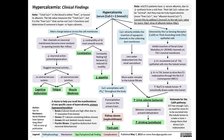Hypercalcemia causes decreased GI motility, leading to constipation and reduced appetite. At the same time, calcium directly inhibits aquaporin channels in the collecting duct membrane, meaning more water remains in tubular filtration, increasing urine volume and causing polyuria.